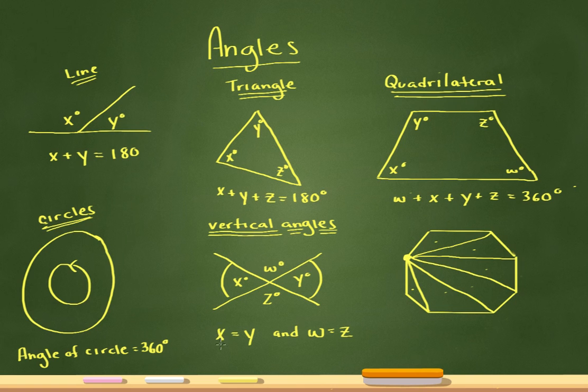So what you need to know is that vertical angles are equal. So X will equal Y because they're across from each other. And W will equal Z because those are across from each other. So those are all the angles that you will need to know for the SAT.